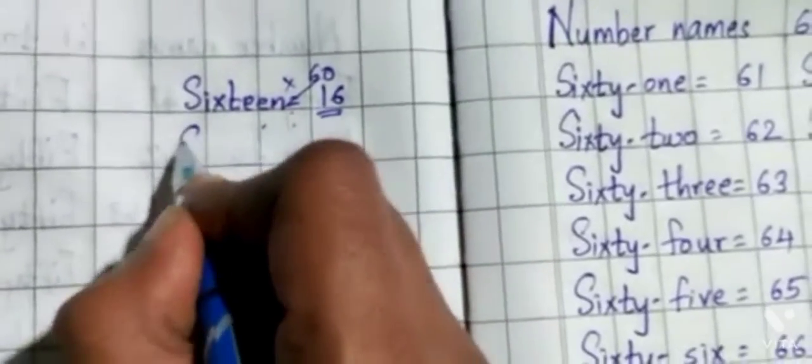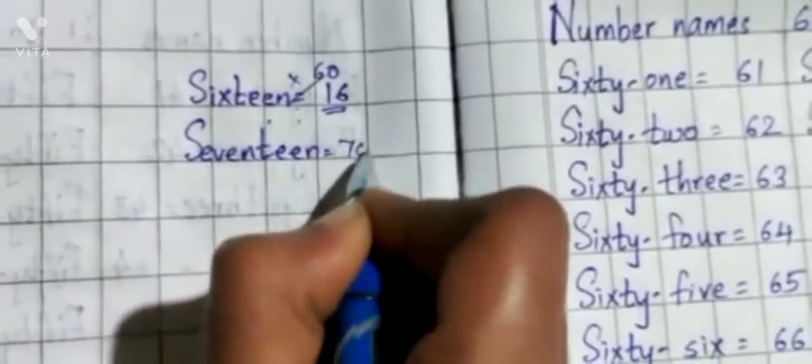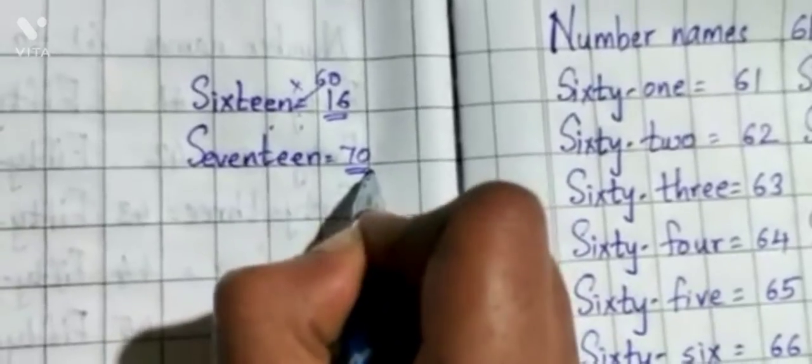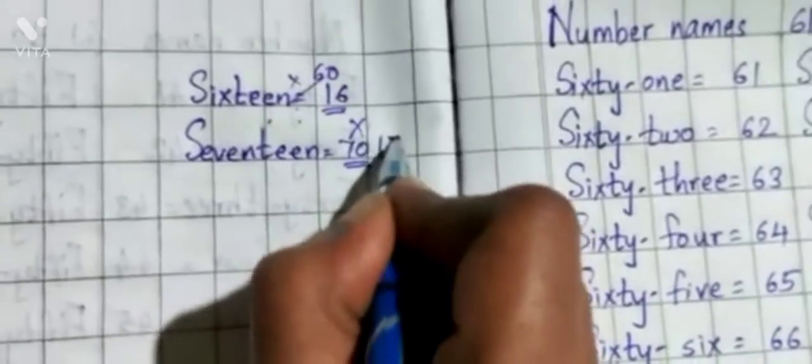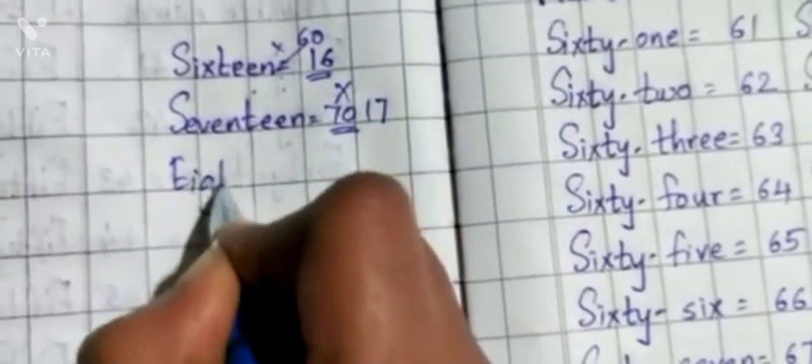And for 70, they write 17 spelling. So this is also wrong. Tell them it's 17. And for 80 also, same mistake.